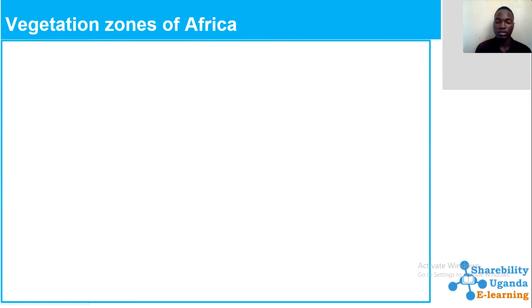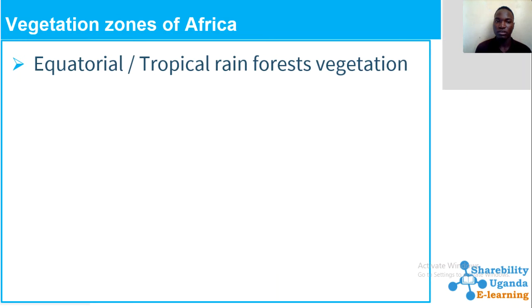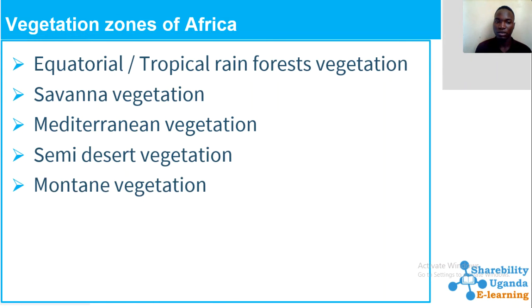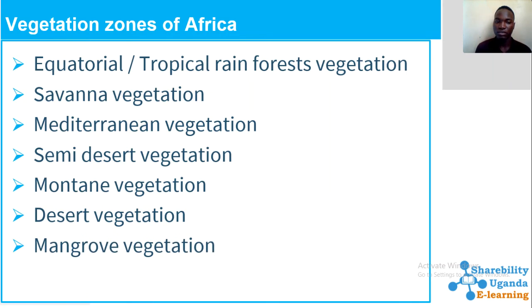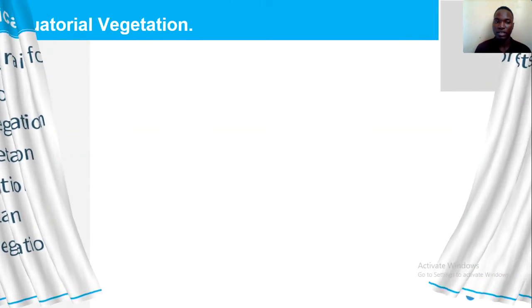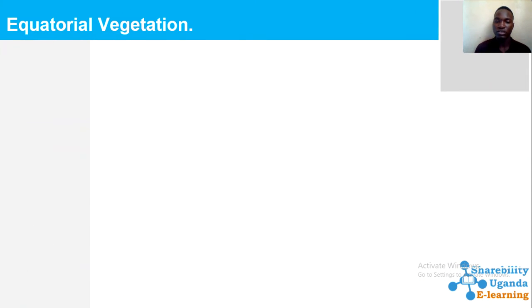Now we're going to look at the vegetation zones of Africa. We have the equatorial or tropical rainforest vegetation, savannah vegetation, Mediterranean vegetation, semi-desert vegetation, mountain vegetation, desert vegetation, and mangrove vegetation. The main zones include equatorial, savannah, Mediterranean, mountain, and tropical vegetation.